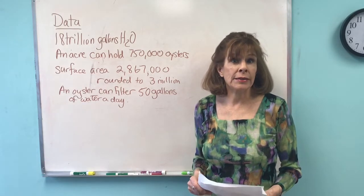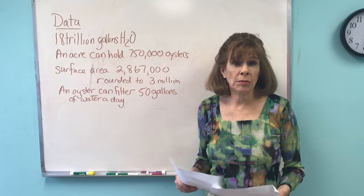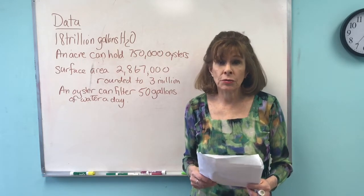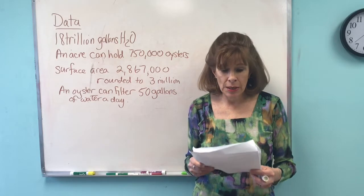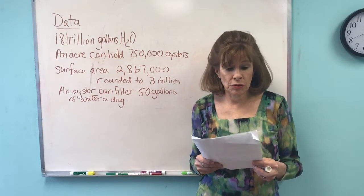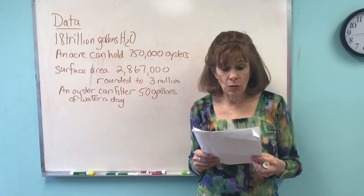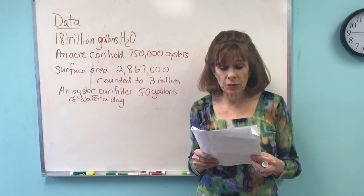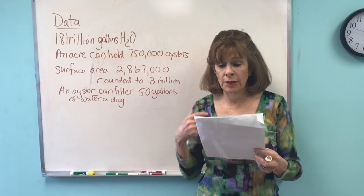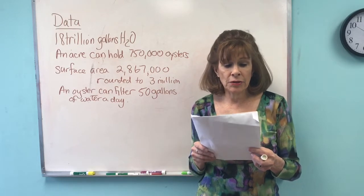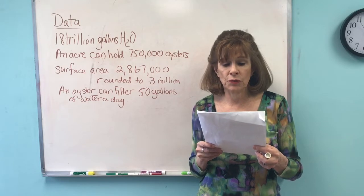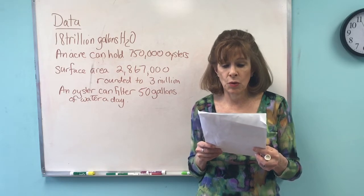I don't have the exact problem because I don't have access — I can only go by the recall of my students who share that information with me. But this is what one of my students wrote: Chesapeake Bay may have 13 trillion gallons of water spread over some number of acres, each acre can hold 750,000 oysters, and each oyster can filter 50 gallons of water every day.